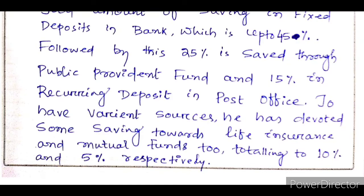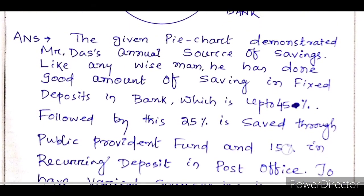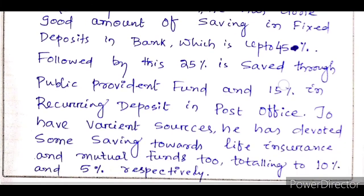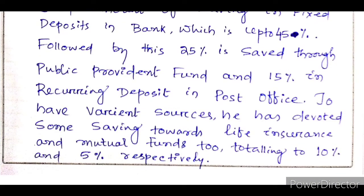'Apart from variant sources, he has devoted some saving towards life insurance and mutual funds too.' Variant means various types of sources for his savings — he also saves in life insurance and mutual funds: 'totalling to 10 percent and 5 percent respectively.' So he saves 10 percent in Life Insurance and 5 percent in Mutual Fund. This is the complete answer on screen — you can take a screenshot, and the PDF link is also in the description for download.